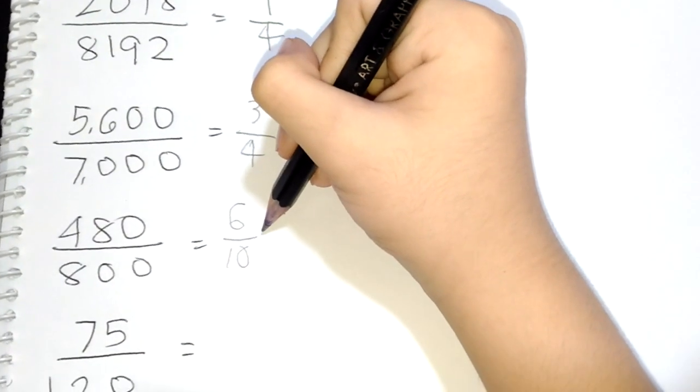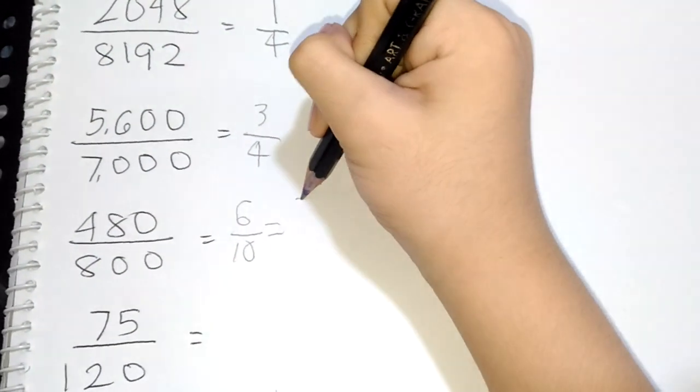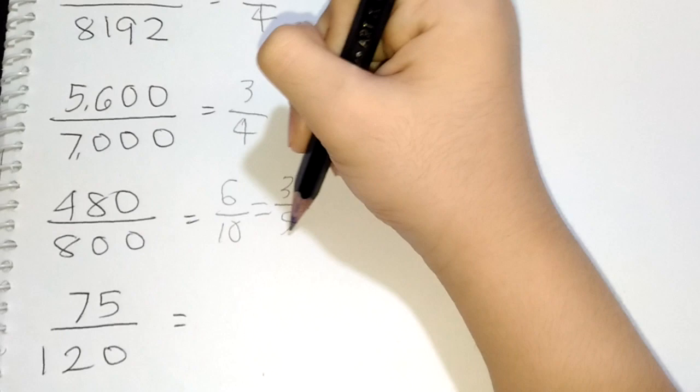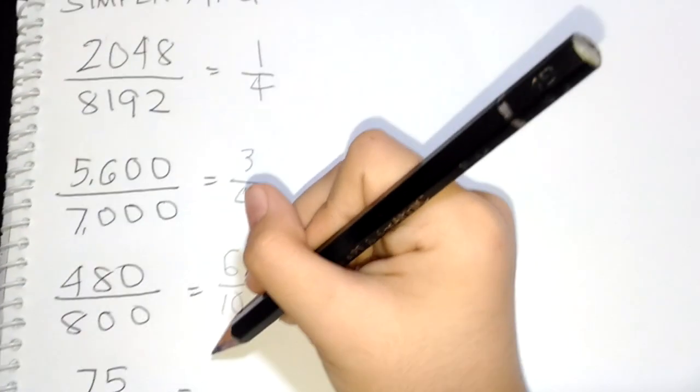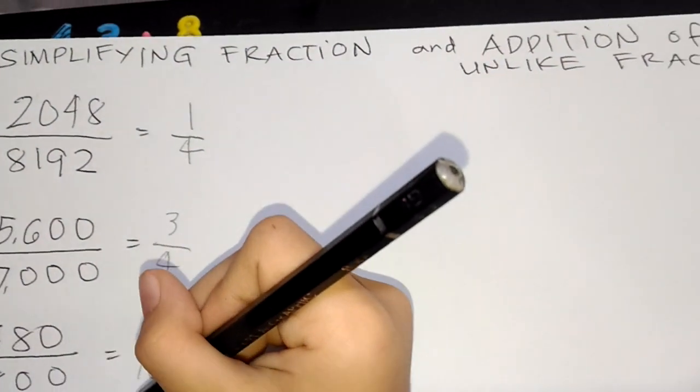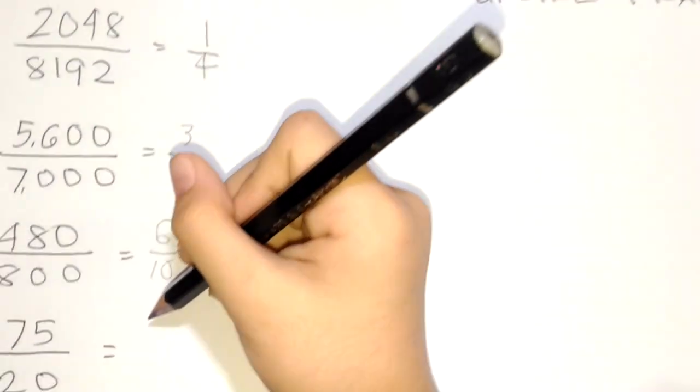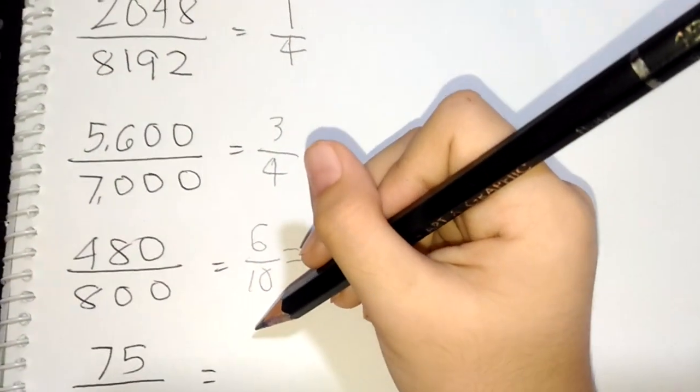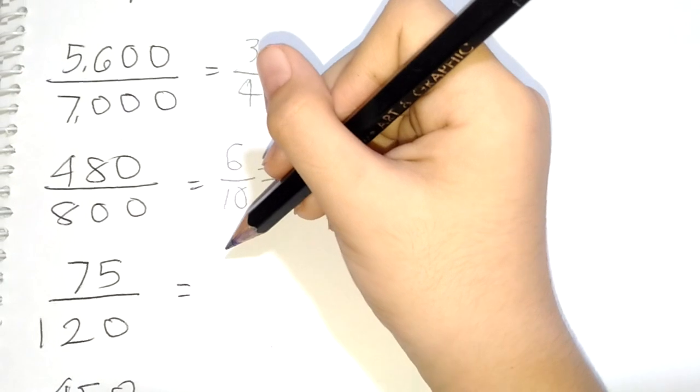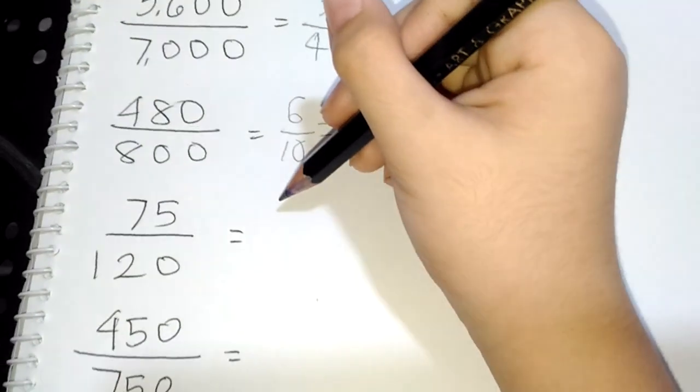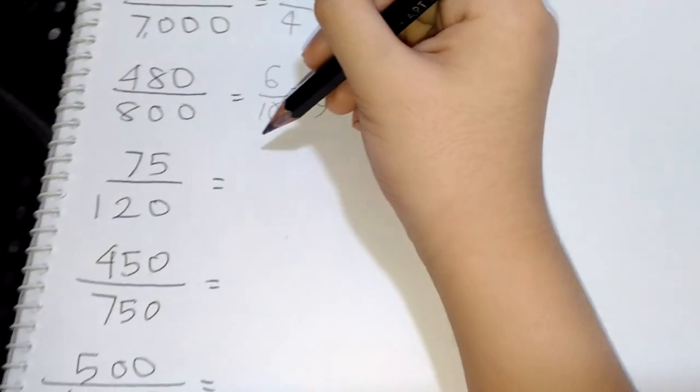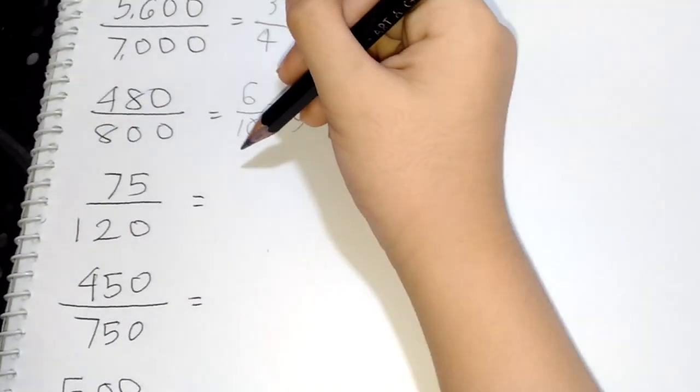Okay, this is in the second simplest term. It still equals to 3 over 5, simplest term. And 75 over 120 is equal to... Okay, this is equal to 25 over 40. So, that means the real answer must be...